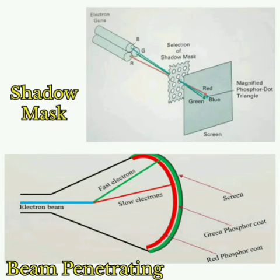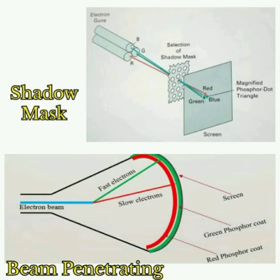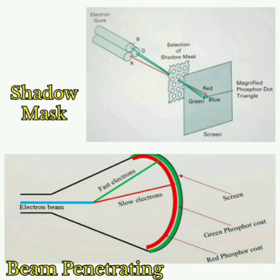Beam penetration method: this method is similar to normal CRT. The CRT screen is coated with two layers of phosphor — red and green — and uses only one electron gun. It is mainly used in random scan systems. Only four colors are produced here. The picture quality is not that good and it does not produce realistic views, but high resolution pictures are generated. Thank you.